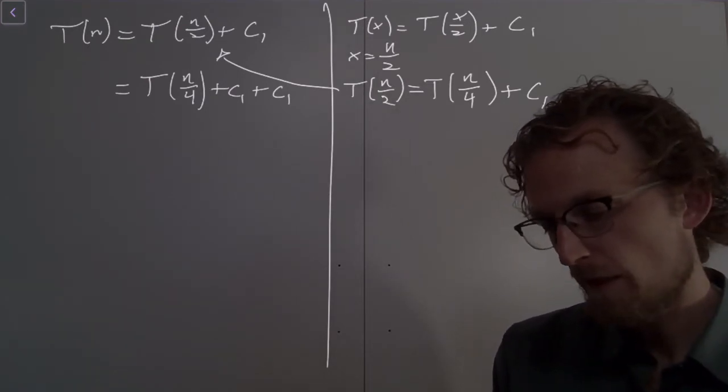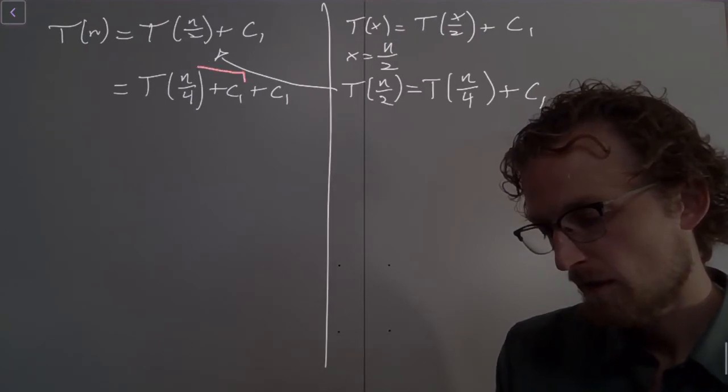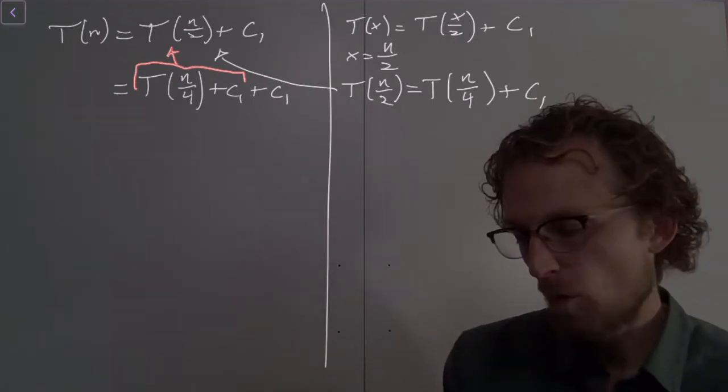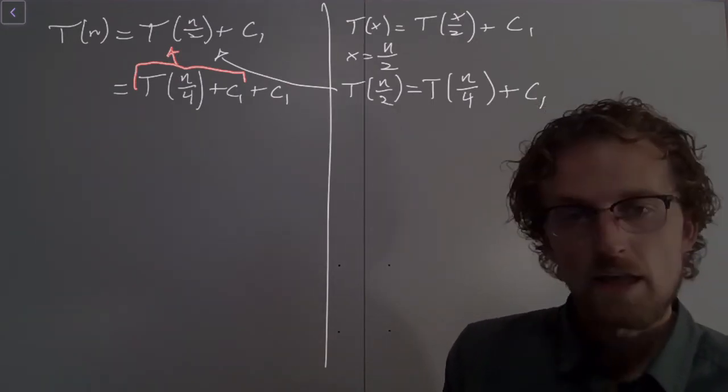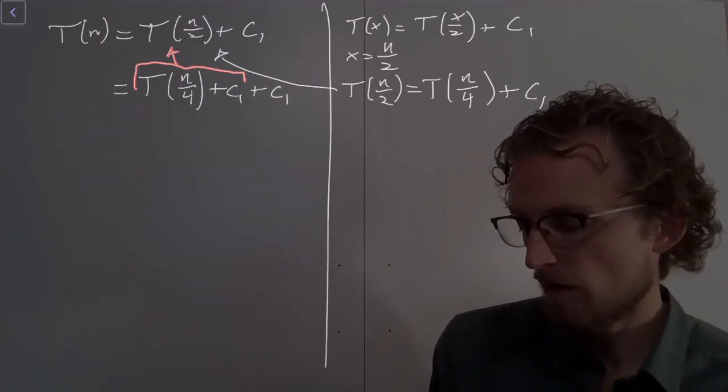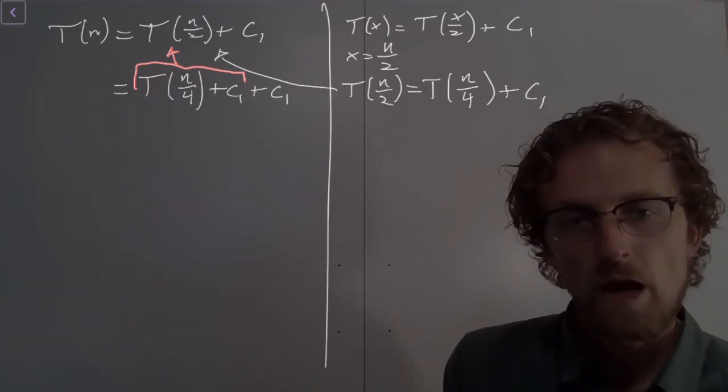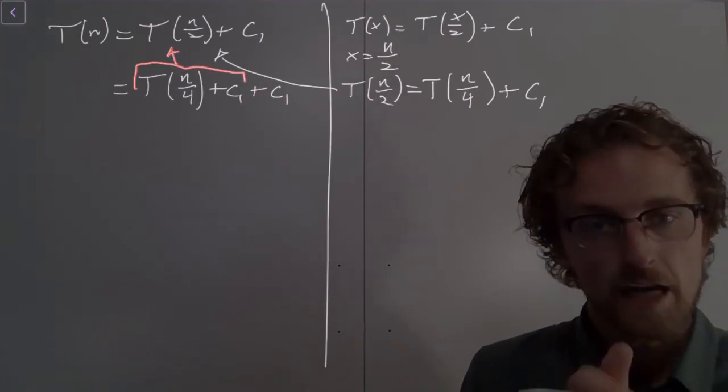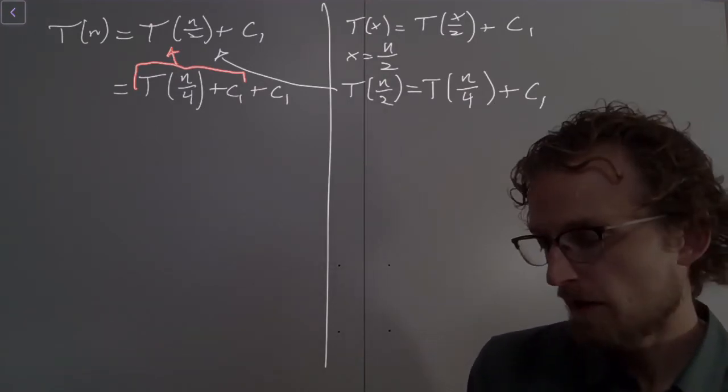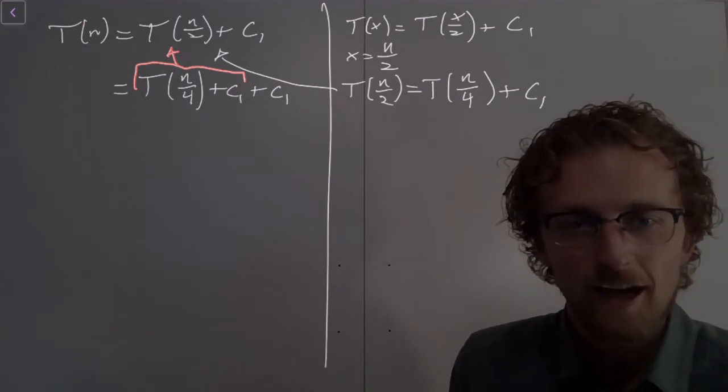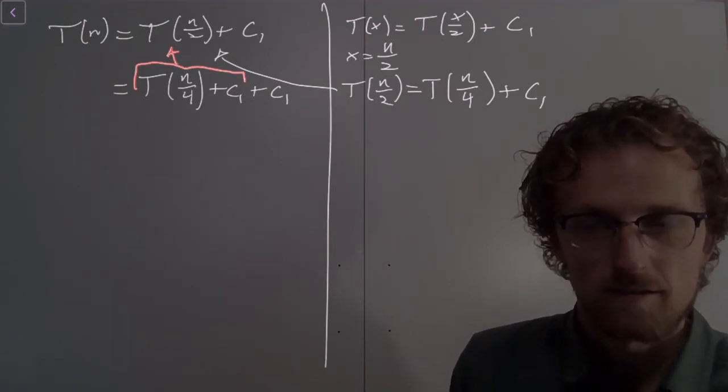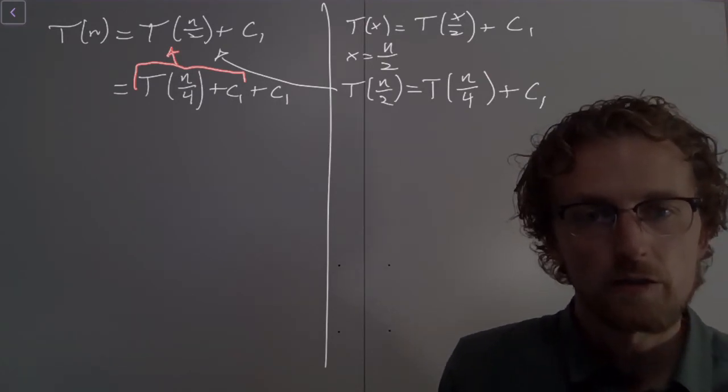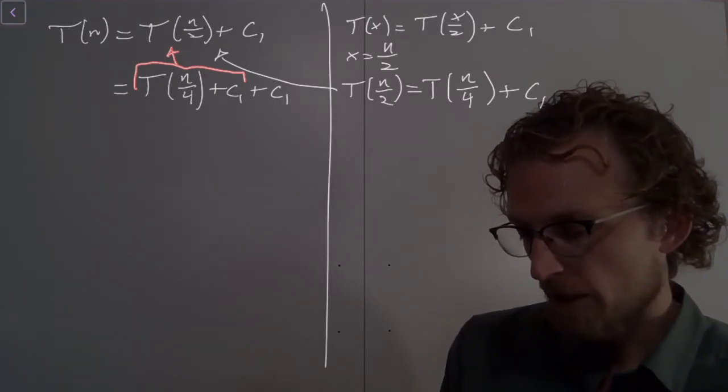And now I'll substitute that back up. And I get T of n over 4 plus c1 plus c1. So it's worth keeping track of where things came from. This came from T of n over 2. So what is this saying? It says that after two recursive calls, our input has now been cut into a quarter of its original size. That's what that n over 4 means. And we've had to do the overhead related to cutting the input in half twice. So we have now two of these overhead terms that have accumulated to our total.